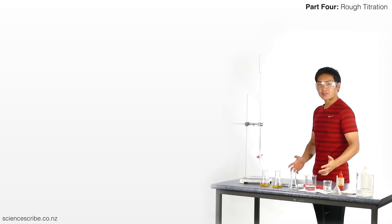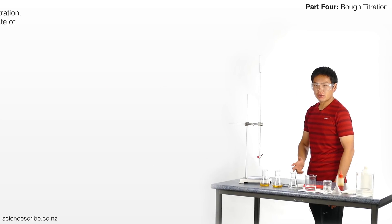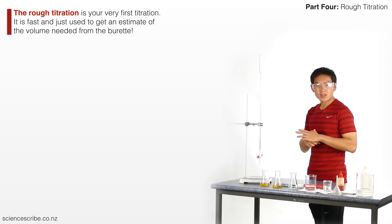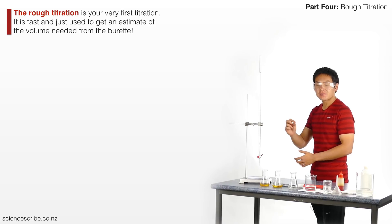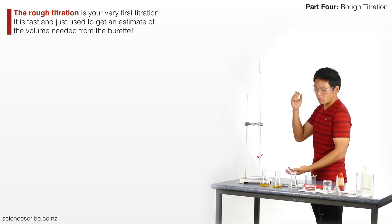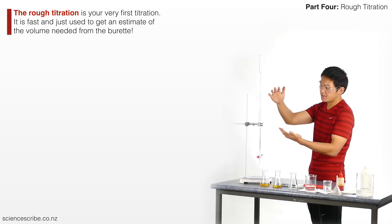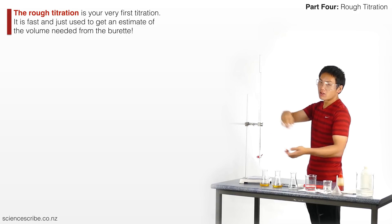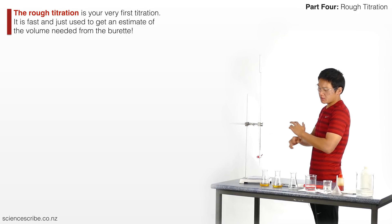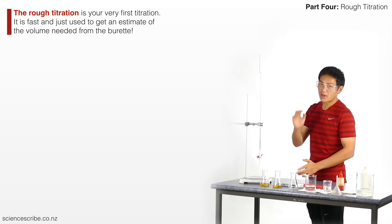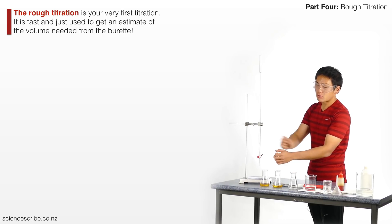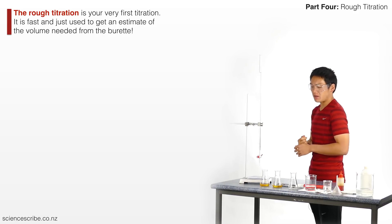We're now ready to start our first titration, but the first titration we're going to run is actually something called a rough titration. A rough titration is just something that's going to be quite fast, and we just want an estimate of how much volume we need. The reason for that is because if this is going to be an assessment, you don't want to waste time squeezing out single drops at a time just to get a single titre volume.